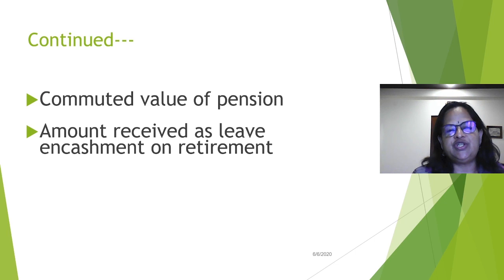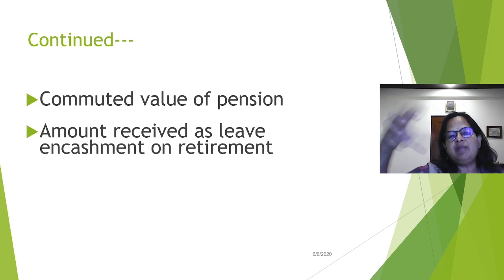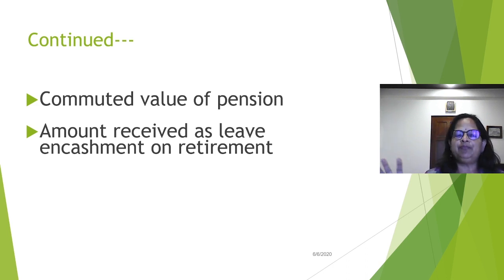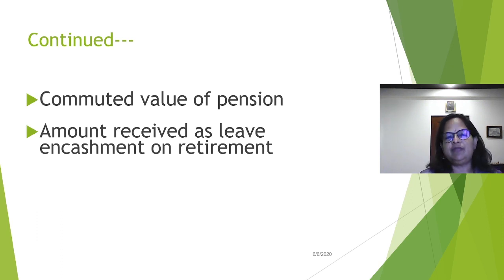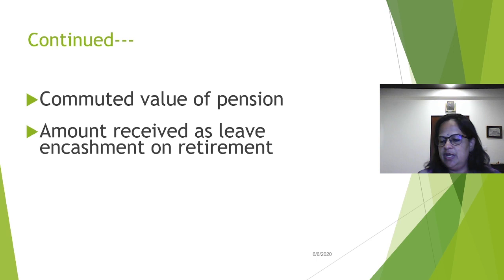Continuing: commuted value of pension. This is very important. Regular pension will be taxable and commuted value of pension will be exempted. You will learn this concept in detail in the salary chapter. One third of the last drawn salary will be the pension usually. For example, if I retire in 2025 and my last drawn salary is 3 lakhs, I am supposed to get 1 lakh as pension — that will be my regular pension. There is a difference between regular pension and commuted pension.